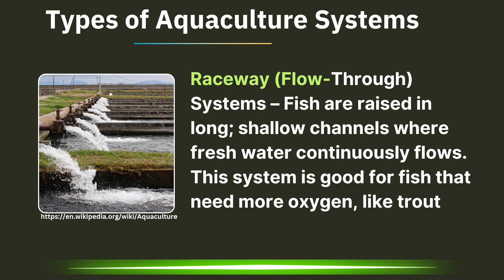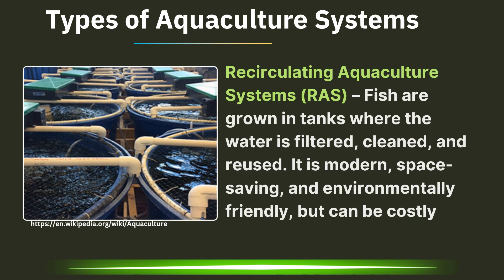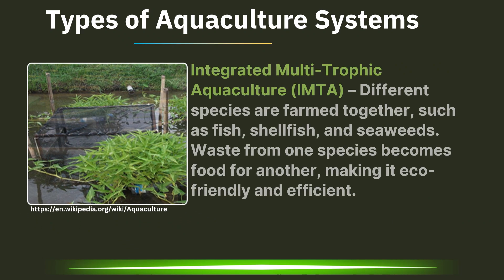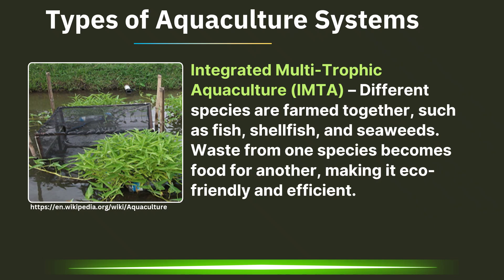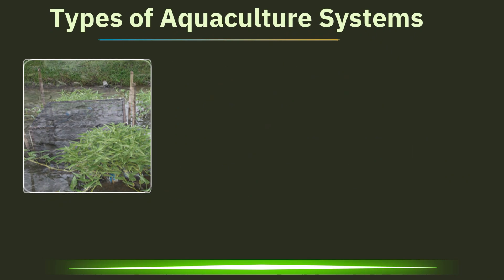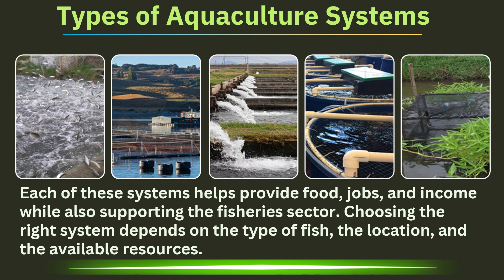Raceway or flow-through systems: fish are raised in long, shallow channels where fresh water continuously flows. This system is good for fish that need more oxygen, like trout. The Recirculating Aquaculture Systems, or RAS: fish are grown in tanks where the water is filtered, cleaned, and reused. It is modern, space-saving, and environmentally friendly, but can be costly. Integrated Multitrophic Aquaculture, or IMTA: different species are farmed together, such as fish, shellfish, and seaweeds. Waste from one species becomes food for another, making it eco-friendly and efficient. Each of these systems helps provide food, jobs, and income while also supporting the fishery sector. Choosing the right system depends on the type of fish, the location, and the available resources.